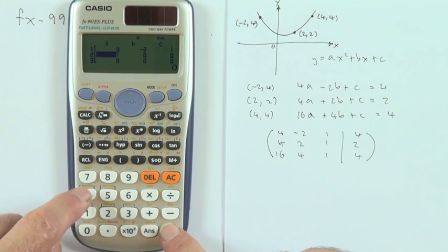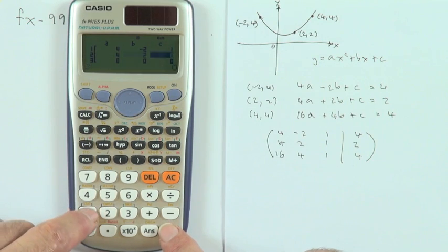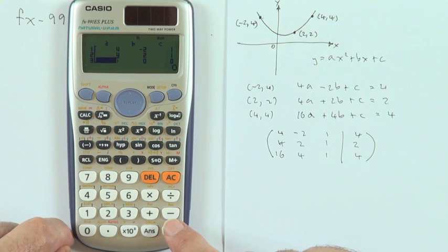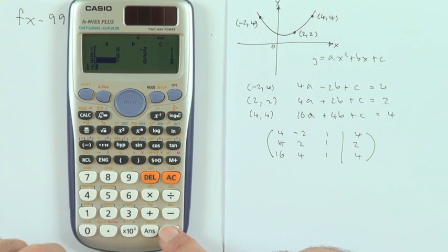Then it jumps back to the next line. Four, two, one, two. It jumps back to the following line. Sixteen, four, one, four.